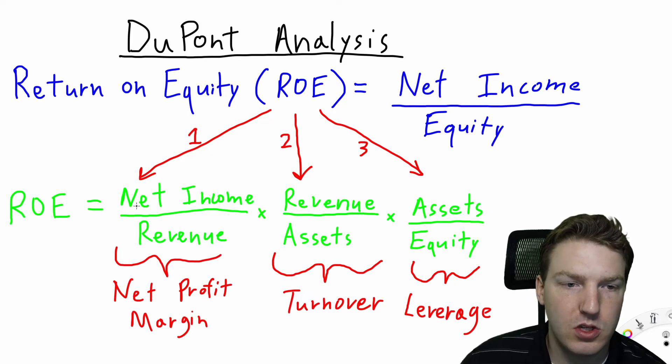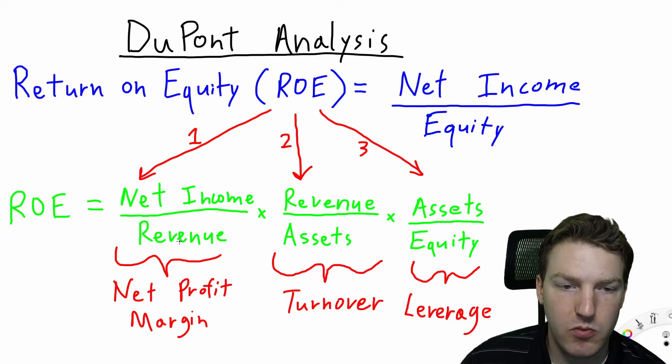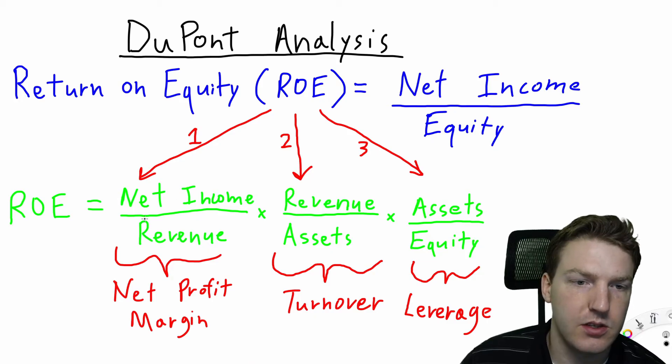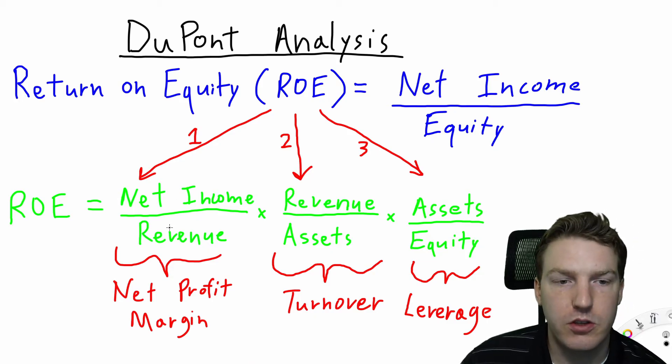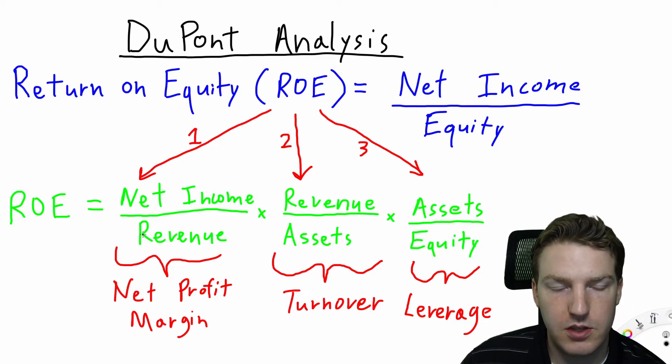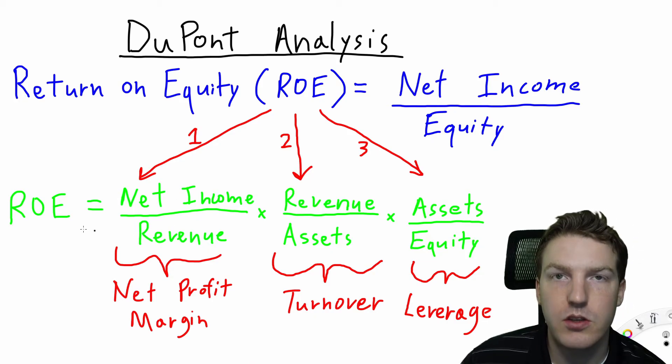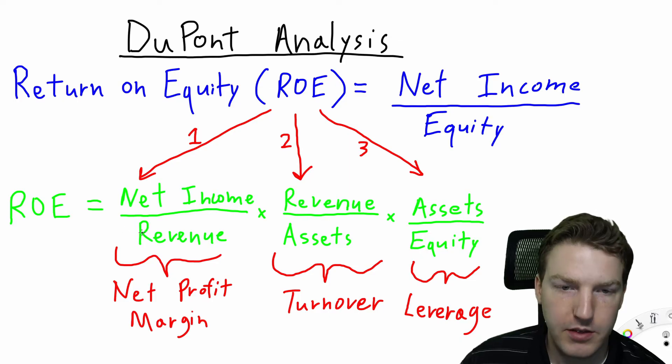The net profit margin is just the net income divided by the revenue. This tells us how efficiently this company is converting its sales into profits.